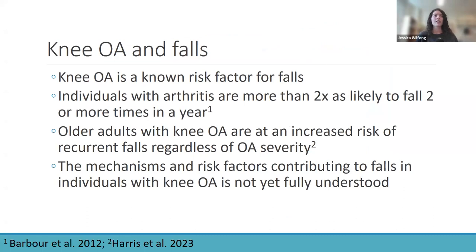Putting everything together: knee OA is a known risk factor for falls, and fall prevention is an important clinical target among individuals with knee OA, because falling can cause further damage to the joint and other injuries, leading to decreased physical activity and social participation. Data from a representative national sample in the US showed that older adults with arthritis are at increased risk of fall-related injuries and are more than twice as likely to have recurrent falls — defined as falling two or more times within a year — compared to people without any arthritis.